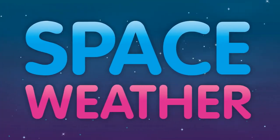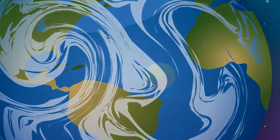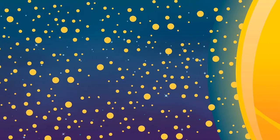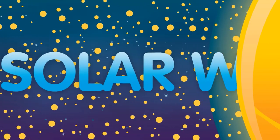The term space weather describes conditions in space near Earth. These conditions are always changing because the Sun constantly releases a stream of charged particles into space. This is called the solar wind.